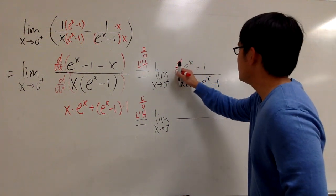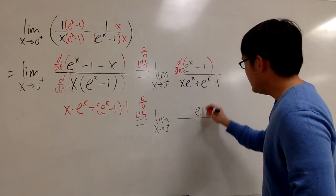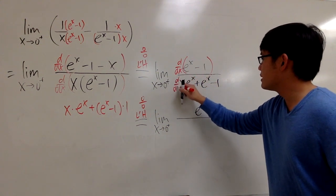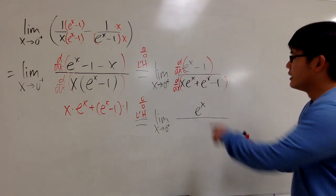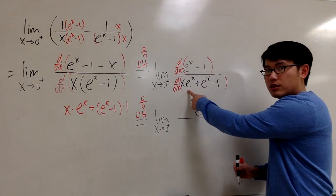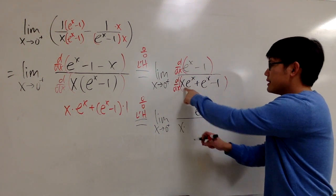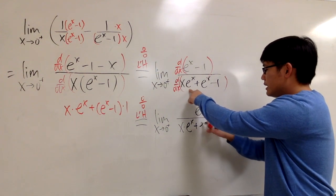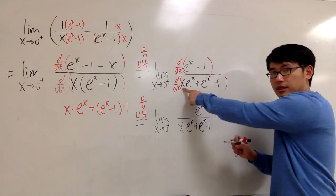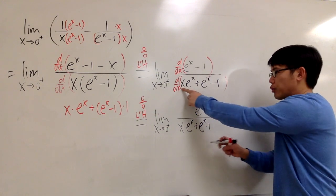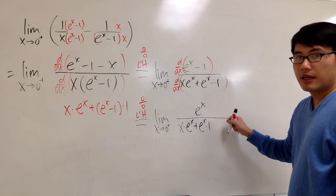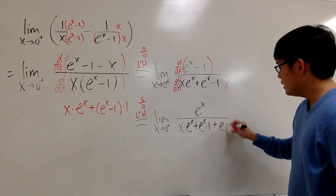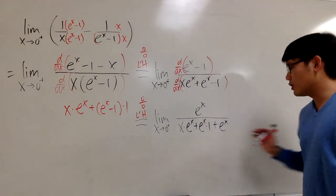On the top, differentiating gives just e to the x. On the bottom, we differentiate x·eˣ plus eˣ minus 1. The term x·eˣ needs the product rule: x times e to the x plus e to the x times 1. We still have the additional e to the x, so we add e to the x. The derivative of e to the x is e to the x. That's all we have on the bottom.